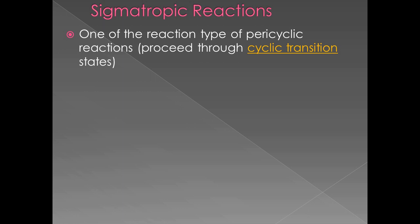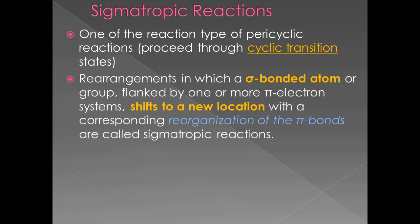The benzidine rearrangement is one type of a pericyclic reaction. Pericyclic reactions, as the name suggests, involve a cyclic transition state. Sigmatropic reactions are a specific type of pericyclic reaction. The definition of sigmatropic reactions is: rearrangements in which a sigma-bonded atom flanked by pi electron systems shifts to a new location with reorganization of the pi bonds. In short, a sigma-bonded atom shifts to a new location with reorganization of the double bonds — meaning the double bonds also shift to another position.